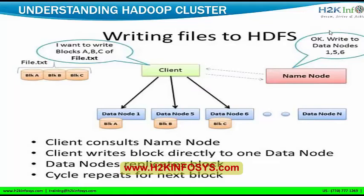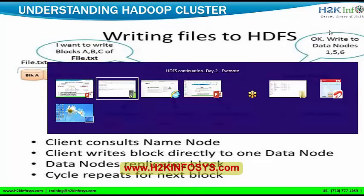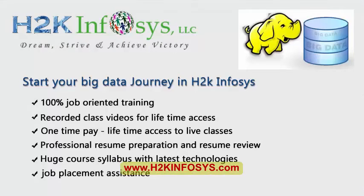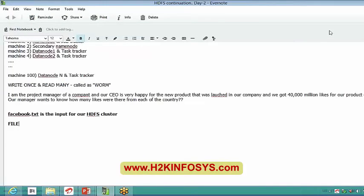The client then writes the data directly to data nodes. For now, imagine block A is placed on data nodes 1, 7, and 9; block B on data node 5 and a few others — with replication done according to the replication factor of three. There is a specific policy for deciding which block goes to which data node, which we will discuss later. Once block A is written and replicated, the cycle repeats for block B and block C.